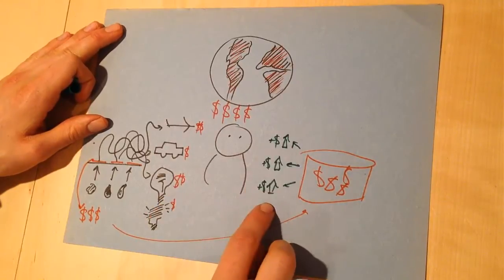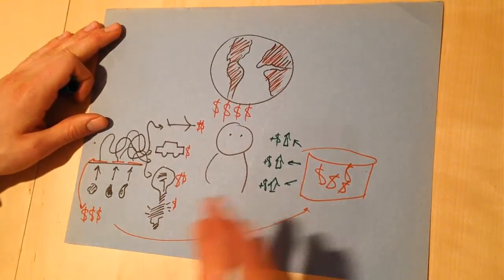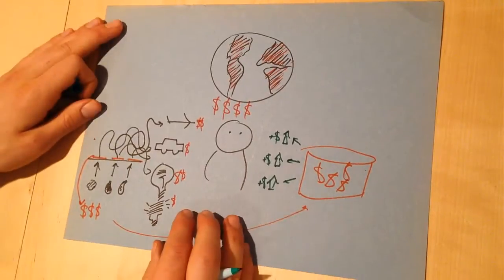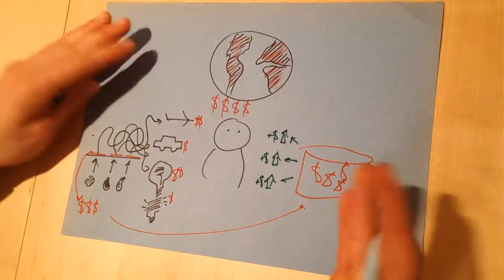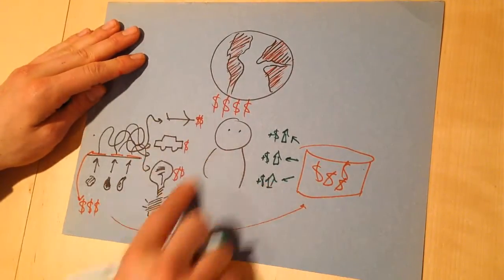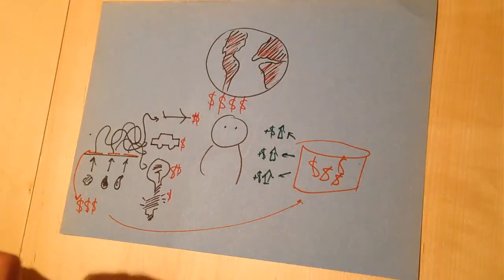Now, every household will get exactly the same check. So, by our estimations, two-thirds of American households actually come out ahead in this scheme. There will be more dividends than the actual increased costs that they're paying.